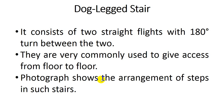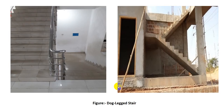After that, the dog leg staircase. This is the most used staircase in construction. It consists of two straight flights with a 180-degree turn between them. They are very commonly used to give access from floor to floor. The photograph shows the arrangement of steps in such a staircase. This is the most well-known and most used staircase in buildings.